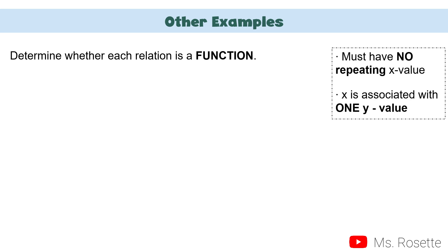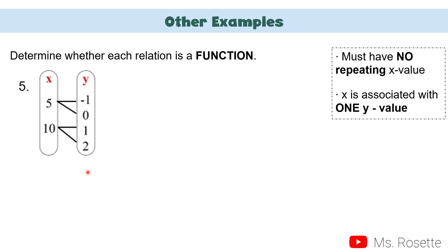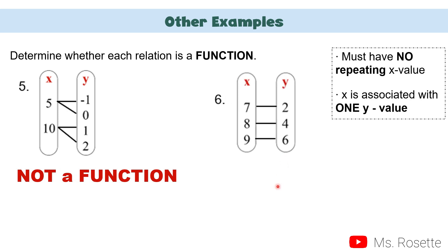Let us have more examples. We have here a mapping. 5 is connected to negative 1 and 0, and 10 is with 1 and 2. Remember: there must be no repeating x value, and x must be associated with only one y value. But here, 5 is paired with negative 1 and 0, and 10 is with positive 1 and 2. Therefore, this is not a function. How about this one? 7 is paired with 2, 8 is paired with 4, 9 is paired with 6. Each x is associated with only one y value. Therefore, this is a function.